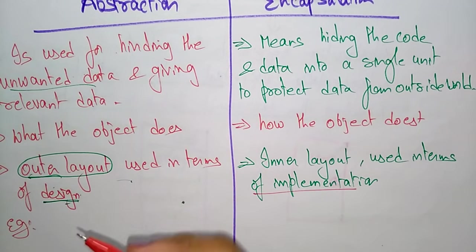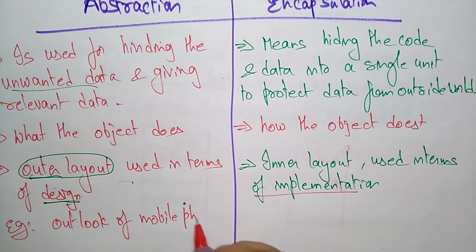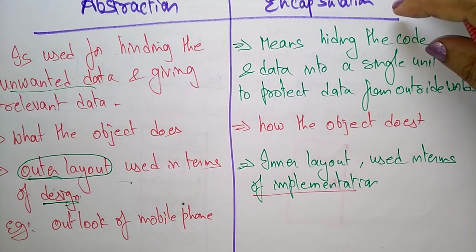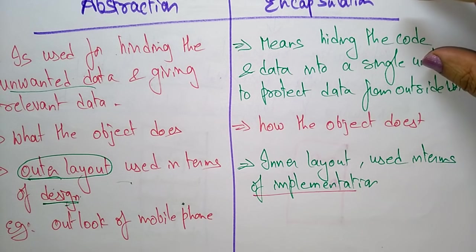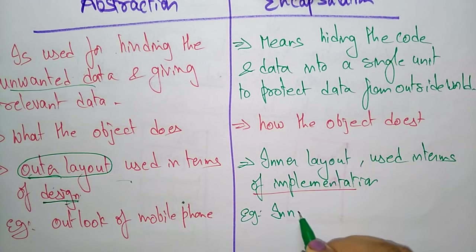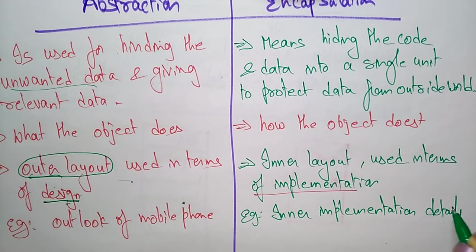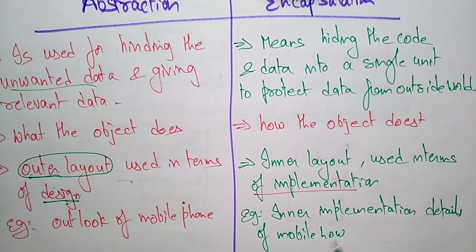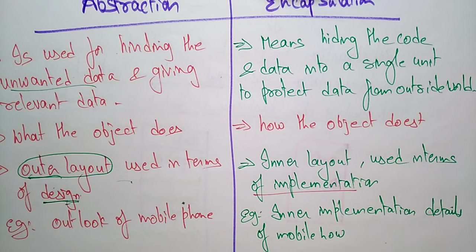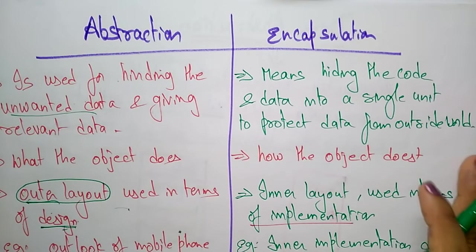The example for abstraction is the mobile phone — the outlook of the mobile phone. What abstraction does with a mobile phone is it just displays the screen and the key buttons used to call, designing the outer look of the mobile phone: display screen, keypads, everything. Whereas encapsulation covers the inner implementation details of the mobile phone — how the keypad and the display screen are connected. The inner implementation deals with encapsulation and the outer look deals with abstraction. This is the difference between abstraction and encapsulation.